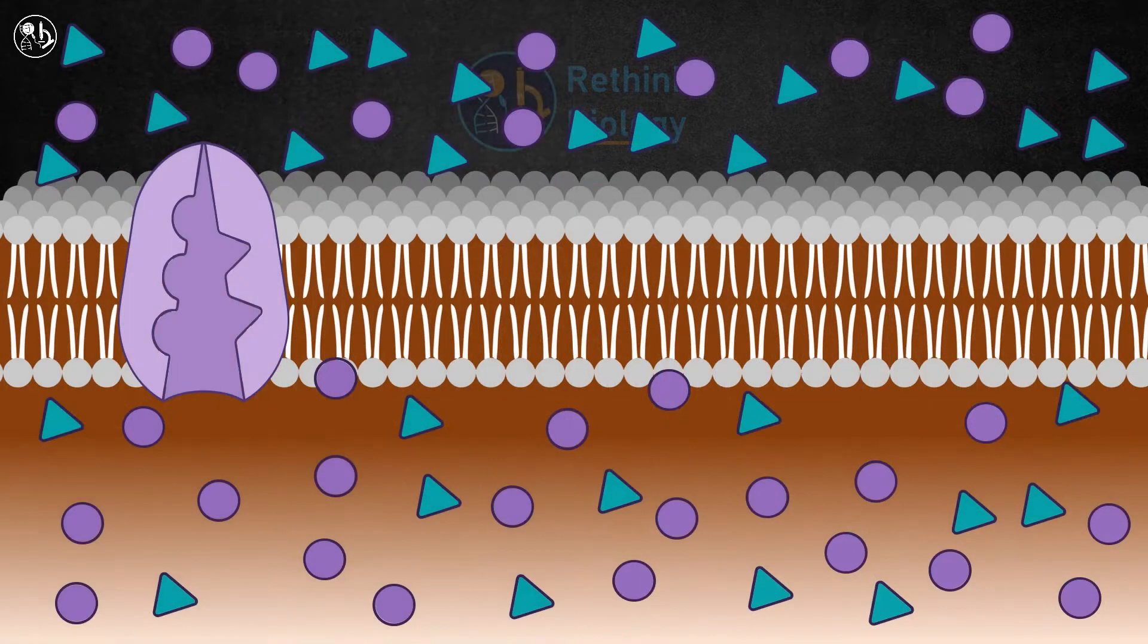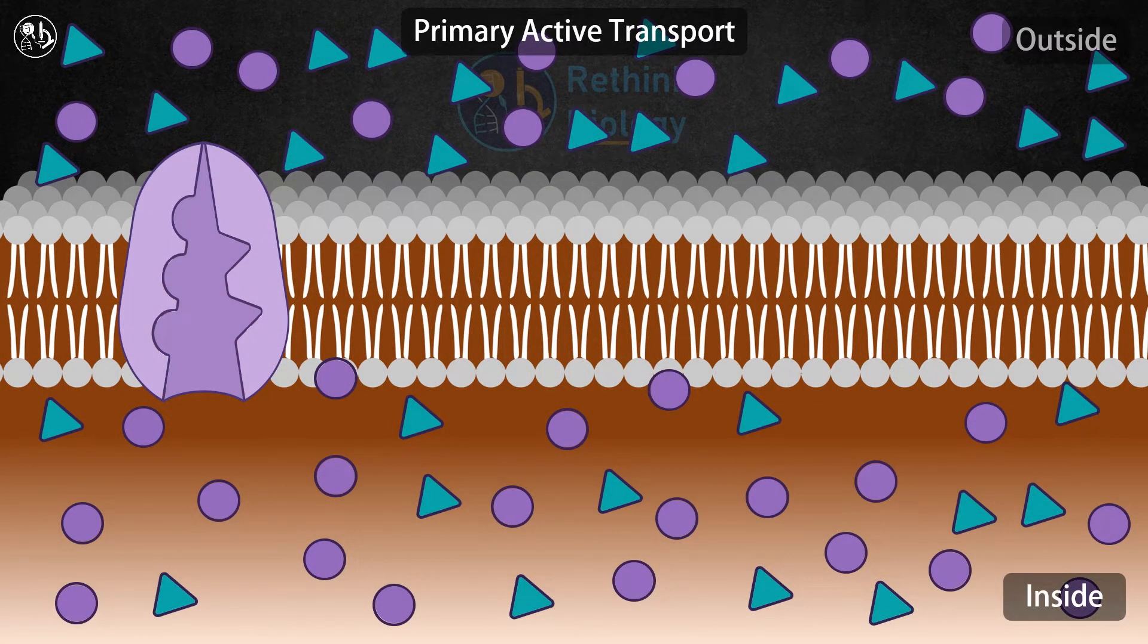The sodium-potassium pump is an example of primary active transport. It moves sodium and potassium ions against their concentration gradient using ATP as a source of energy.